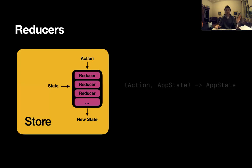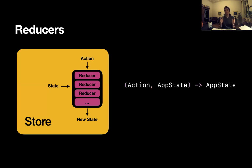Then we have reducers, which are the main business logic part of the app. They live inside the store, they get the action and the current state, and they return a new state. It's basically a function which takes two parameters — action and state — and returns state.